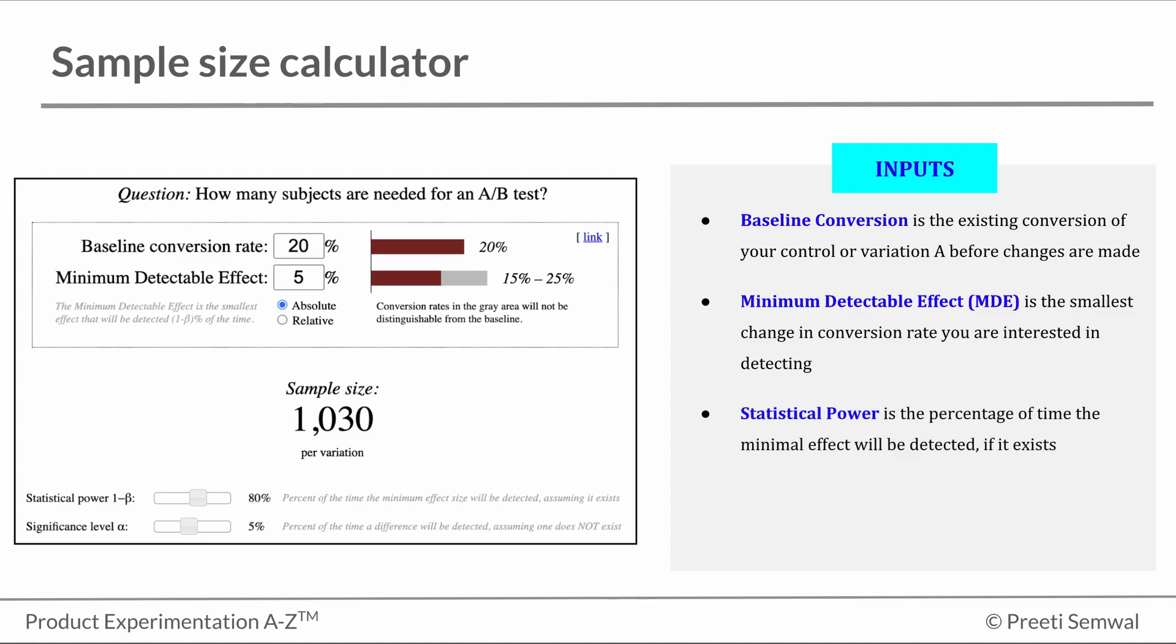Statistical power, which as we know is the probability that the test correctly rejects the null hypothesis, or in other words, the percentage of time the minimum effect will be detected if it exists.